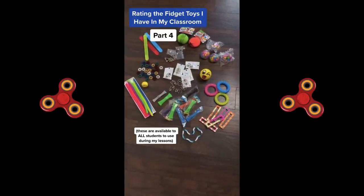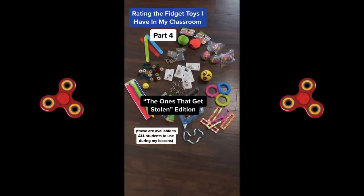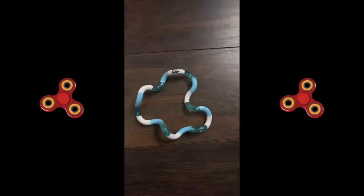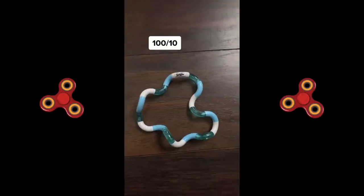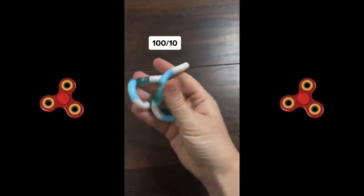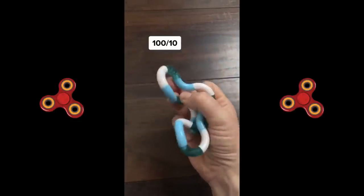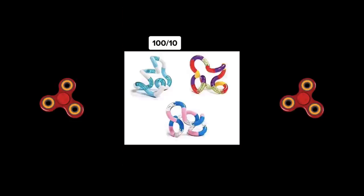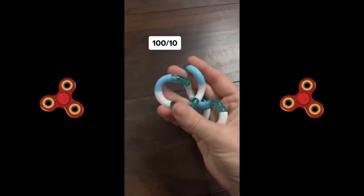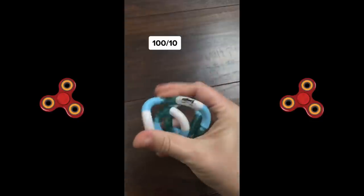Rating the fidget toys I have in my classroom. The ones that get stolen edition. These tangles are incredible. So incredible that I bought a pack of 20 last year, but I only have one to demonstrate because the rest have disappeared. They come in every color combination you can imagine. The links come apart so you can mix and match with other Tangle Juniors.